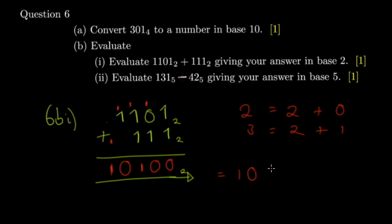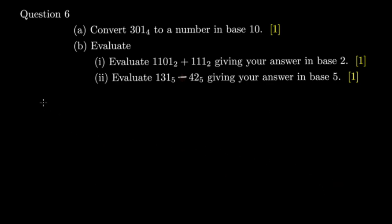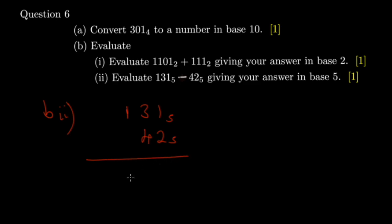For part b item two, you have 131 plus 5 subtract 42 plus 5. This is in base 5. If you know how to do ordinary subtraction from primary school, then you know how to work this out.